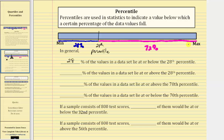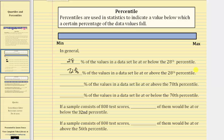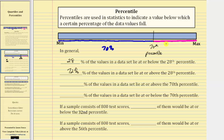The next two questions involve the 70th percentile. Going back to the graph, the 70th percentile would be the data value approximately here, where 70% of the data values — these data values here — are at or below the 70th percentile, which means 30% of the data values are at or above the 70th percentile. We're asked to find the percent of data values that lie at or above the 70th percentile, which is 30%. And the percent at or below the 70th percentile is 70%.